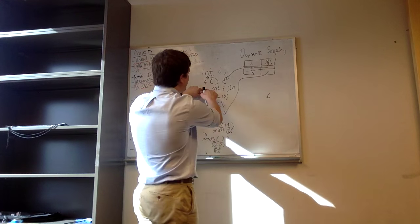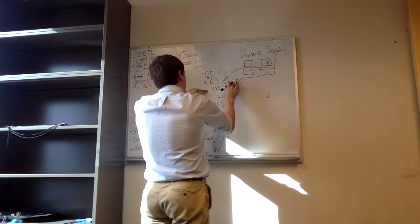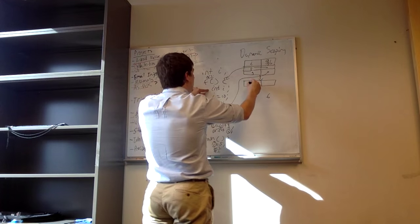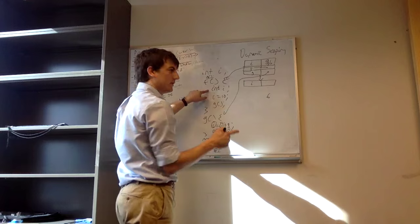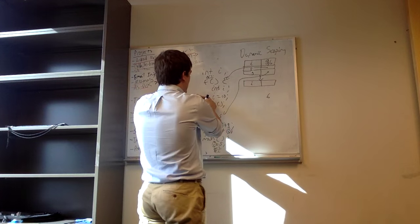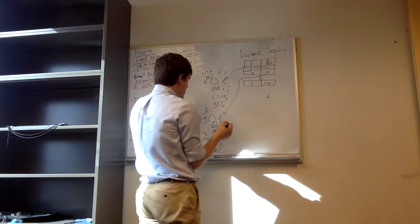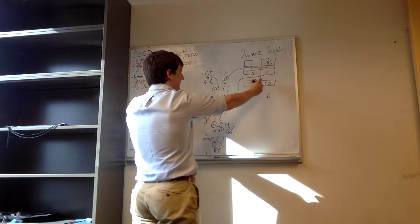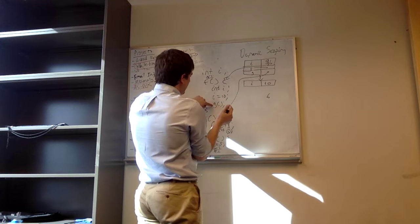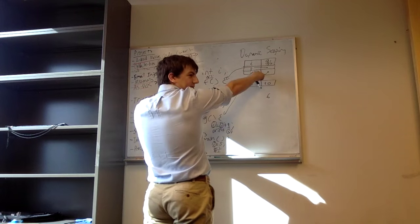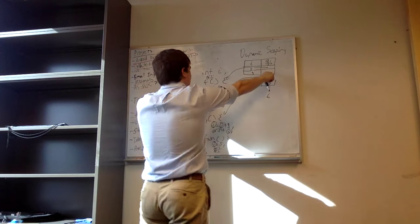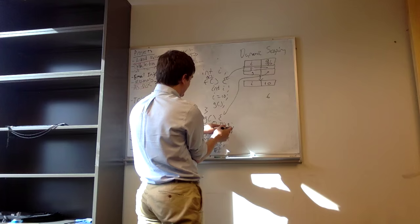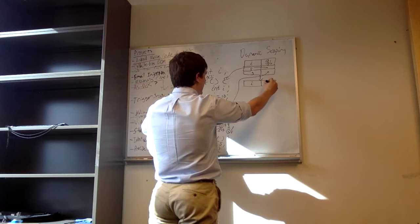Now we start executing f. We see a new declaration for a new integer in this scope, so we create a new entry in our symbol table for i that doesn't have a value yet. But we see the assignment line, so we set i to 10. We know which i this refers to because we look it up in the table bottom to top — we see the local i in f's scope and put the value 10 there. Then we call g again, and we look up g in this dynamic scoping table to find the body of the function.